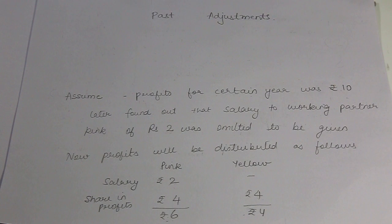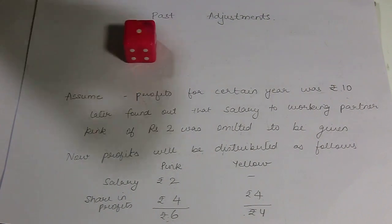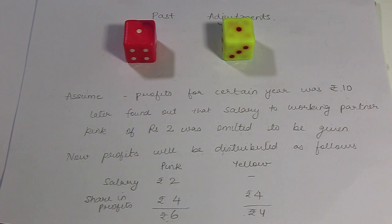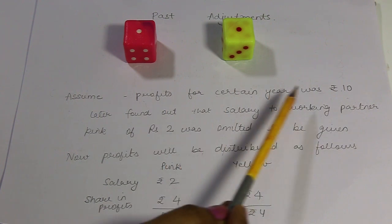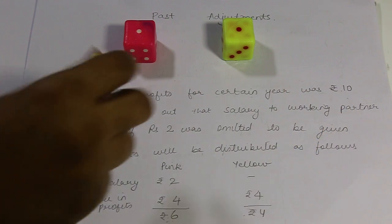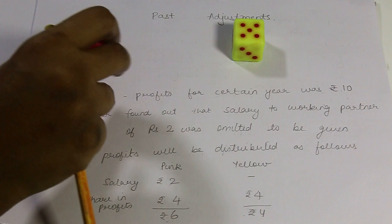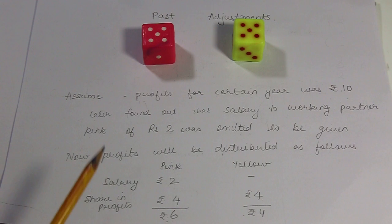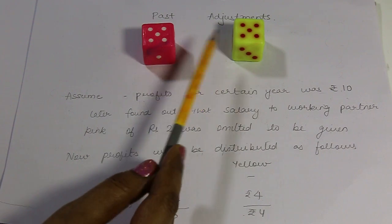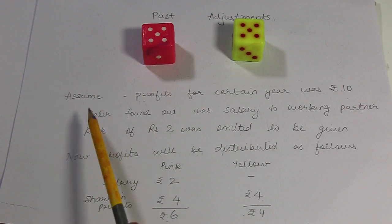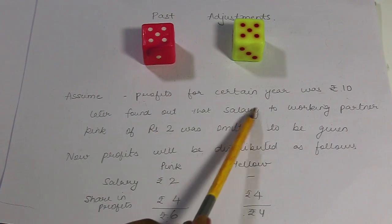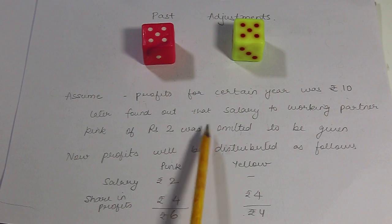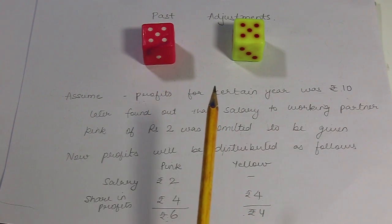Let us take a partnership firm in which two partners are there — partner Pink and partner Yellow. As per the partnership deed, they were sharing profits and losses equally among them. Assume in a certain year, profit was Rs.10, so partner Yellow gets Rs.5 and partner Pink gets Rs.5. Now, we have realized that salary to working partner Pink of Rs.2 was omitted to be given, so Pink should get the salary but did not get it.